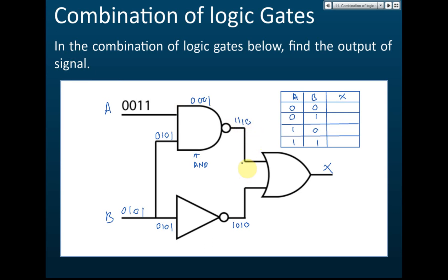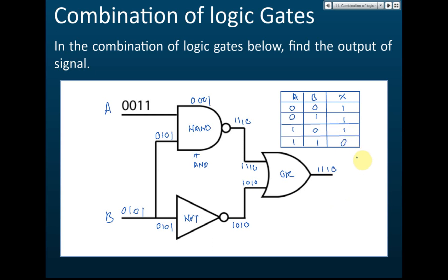So the NAND gate output is one, one, one, zero, and the NOT gate output from input B is one, zero, one, zero. Now the final gate is an OR gate. With inputs one, one, one, zero and one, zero, one, zero, the OR gate output X is one, one, one, zero. That is how we find the output of a combination of logic gates.